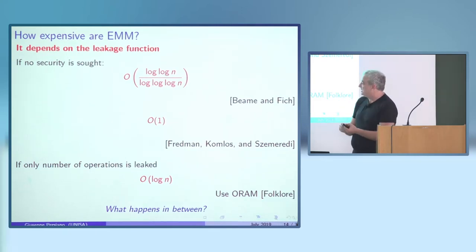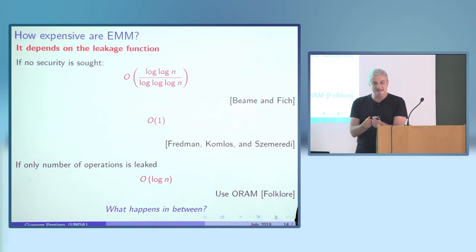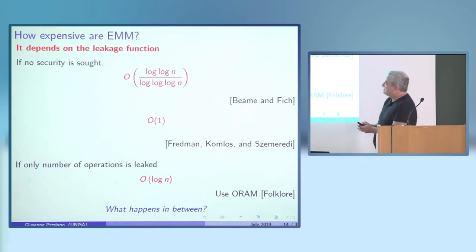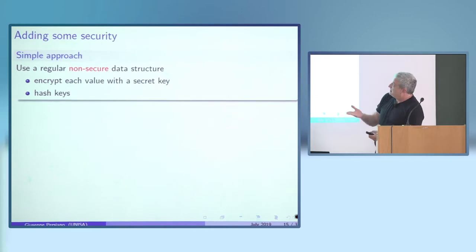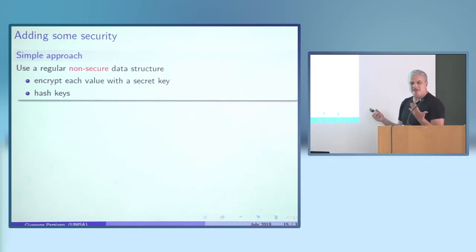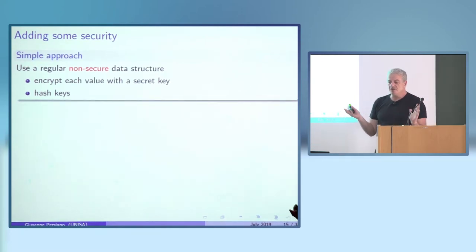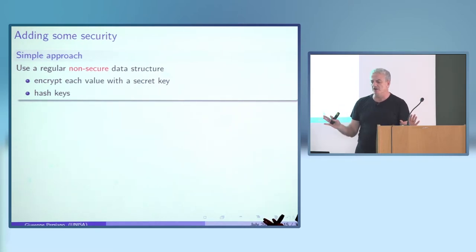The question is what happens in between — specifically, what is the minimal leakage that causes a jump from constant to log n overhead? Starting from constant overhead and adding just a little security: a simple approach for encrypting multi-maps is to CPA-encrypt all values with a secret key and hash all keys, so the server sees only funny-looking values and keys.